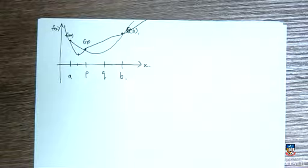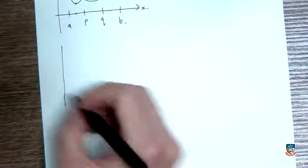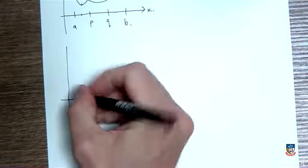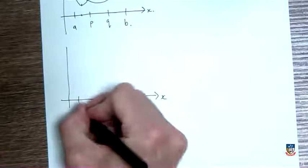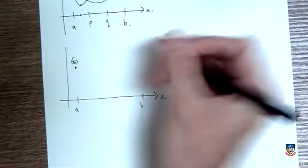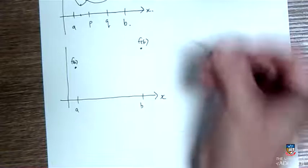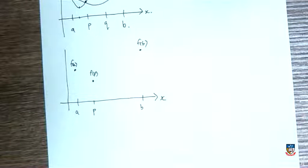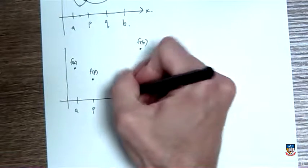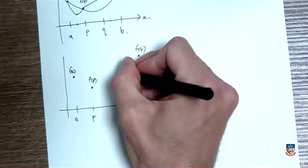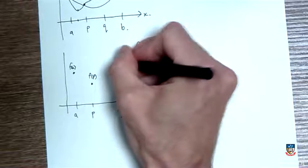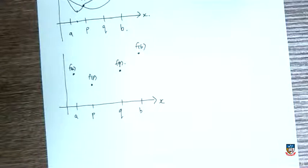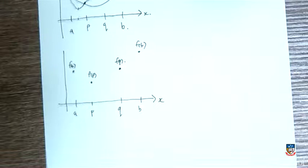But if I take another point, q, then that might give me more information. So let me redraw this picture. So here's a, here's b. Let's say that f of a was there, let's put f of b up here, let's say f of p if p was there. If I also draw f of q in here, well, f of q might be there. So if f of q is there, then now I can say something.